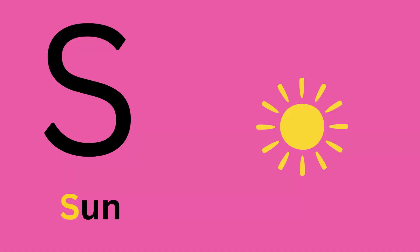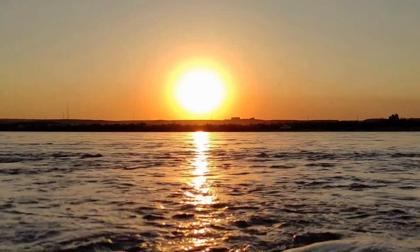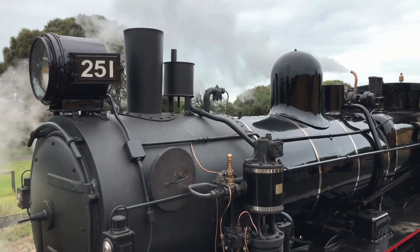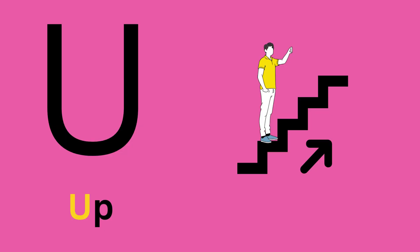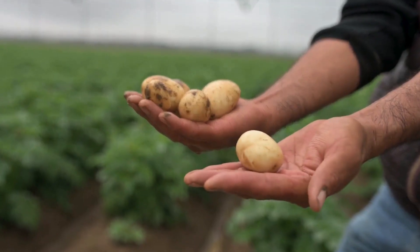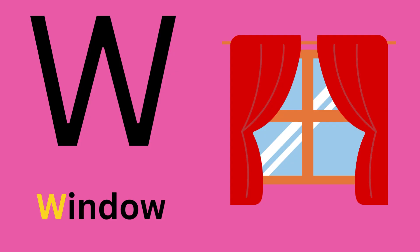S for sun, T for train, U for up, V for vegetable, W for window.